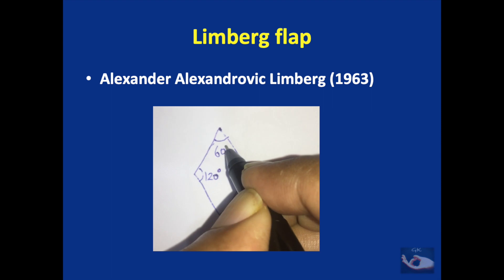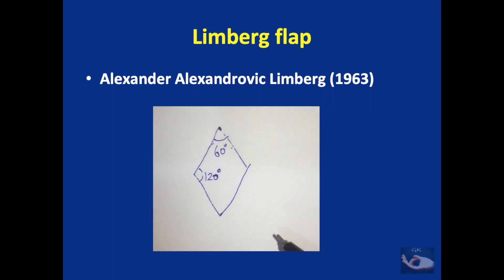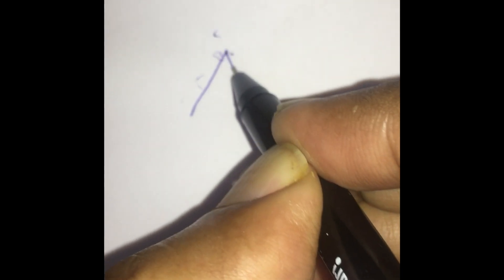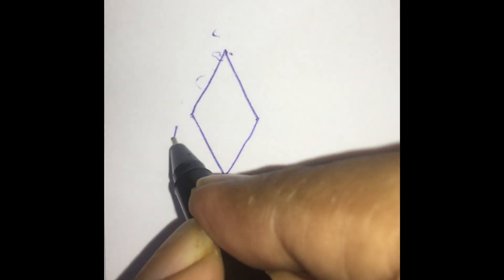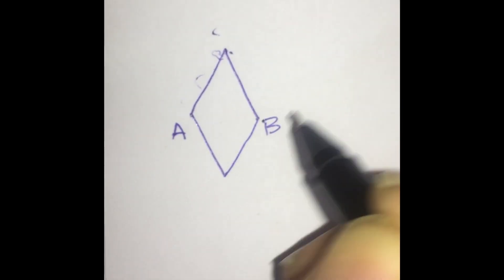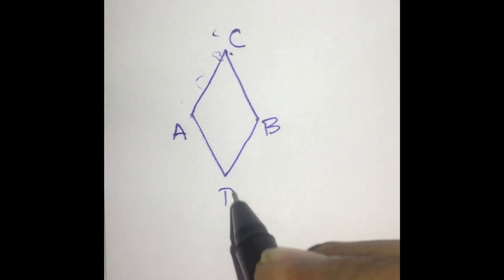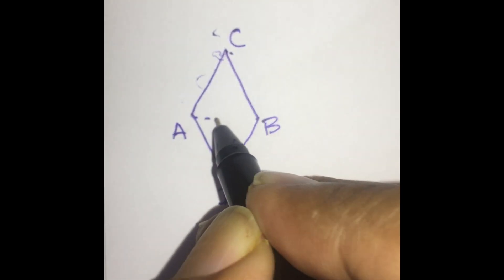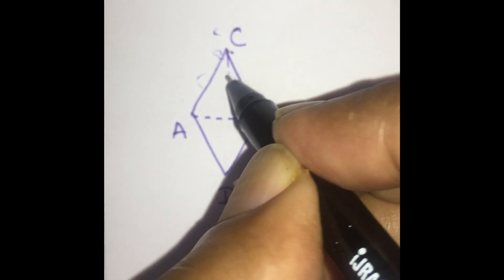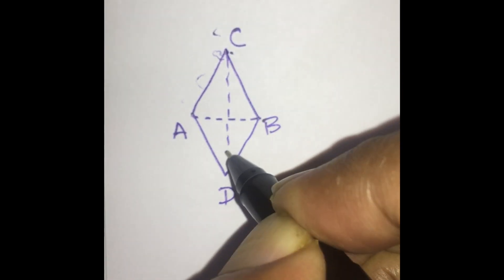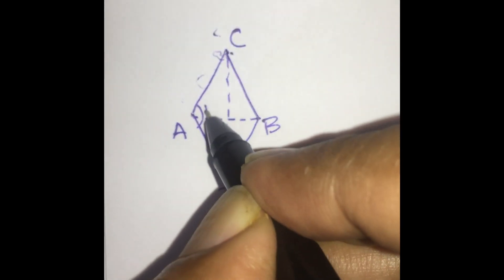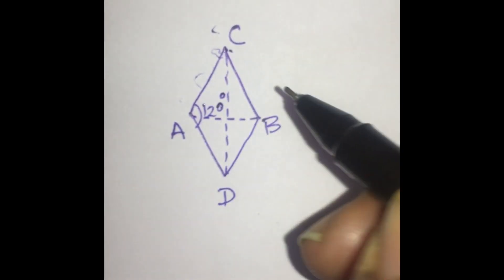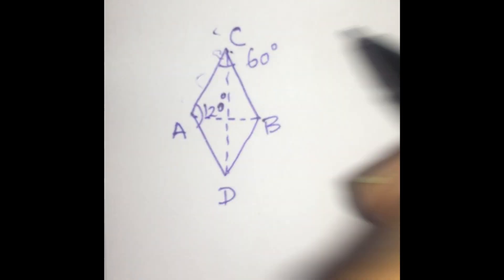Characteristically, the angles are 120 degrees and 60 degrees. It is the defect that is in the shape of a rhomboid. This rhomboid is drawn as follows: the four points are marked A, B, C, and D. AB is the short diagonal and CD is the long diagonal. The angle CAD measures 120 degrees and the angle ACB measures 60 degrees.